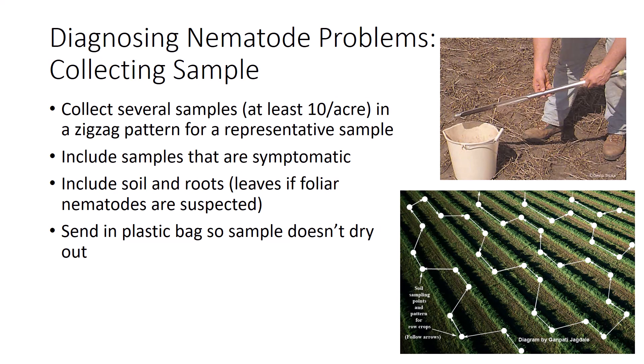Laboratory analysis of soil and/or plant tissue samples is often necessary to complete a diagnosis. When collecting the sample for a nematode assay, collect at least 10 samples per acre using a zigzag pattern in order to have a representative sample. You should include symptomatic samples and make sure you include both the soil and the roots. If you suspect foliar, bud, or seed nematodes, then include that part of the tissue. Make sure you collect the sample in a plastic bag because nematodes need moisture to survive. Send your sample right away — one mistake many farmers make is to collect their sample and then store it on the windshield of the truck, which cooks their sample.